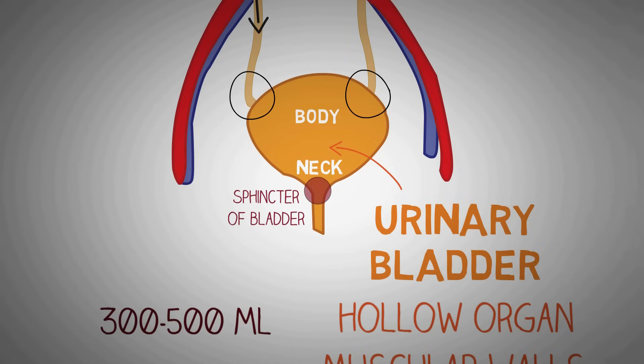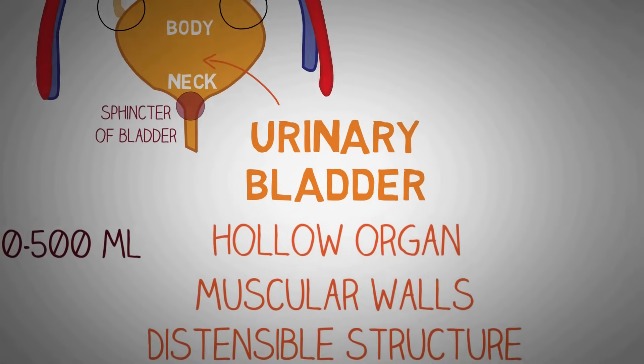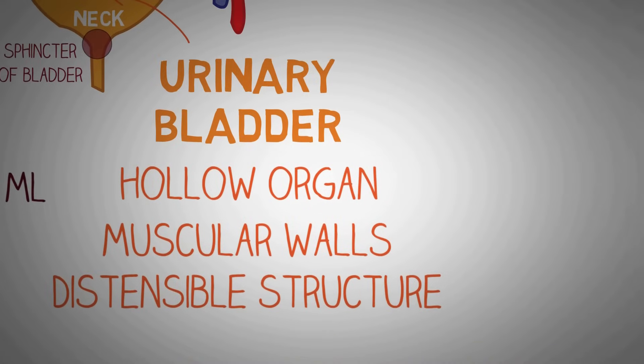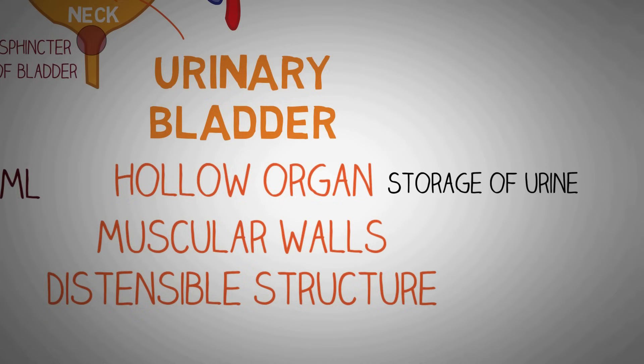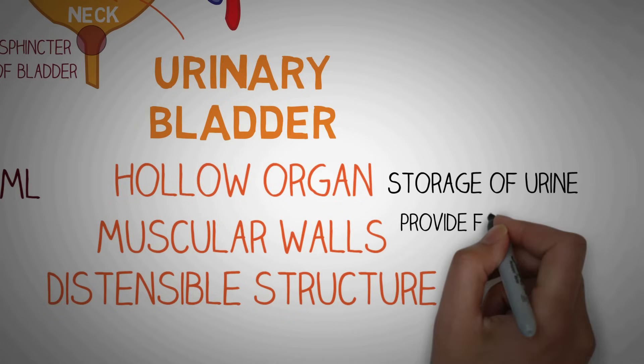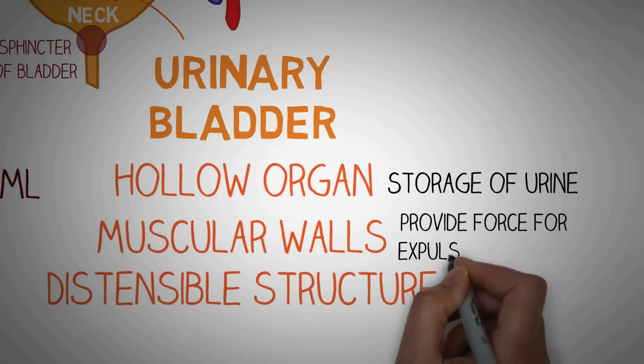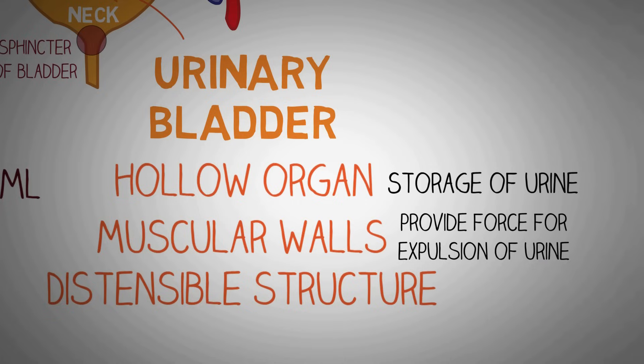This ring of smooth muscles is known as the sphincter of the bladder. The kidneys keep producing urine which is carried by the ureters into the urinary bladder. The urinary bladder provides two important functions: first, it is a hollow organ used to store urine, which is very important as you can imagine what running to the toilet every 10 minutes would look like. Second, the urinary bladder is a muscular organ, and the contractions of its muscles provide the force by which urine is expelled from the body.